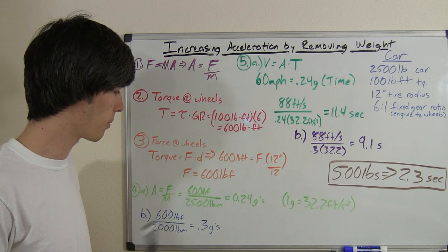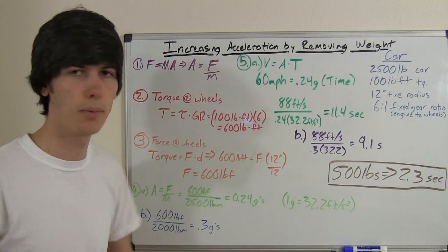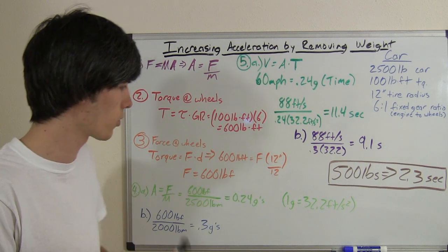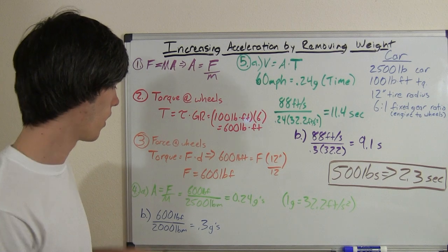So 600 divided by 2,500, that's 0.24 g's, a g being a unit of gravity, 32.2 feet per second squared. So 0.24 g's, 0.24 units of gravity.